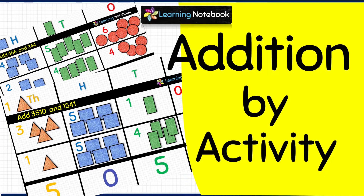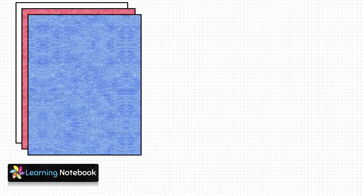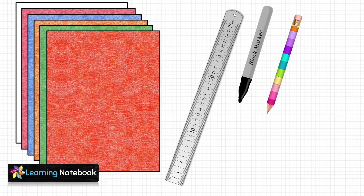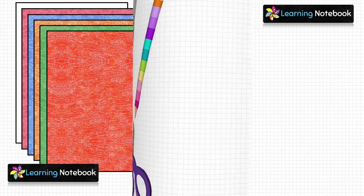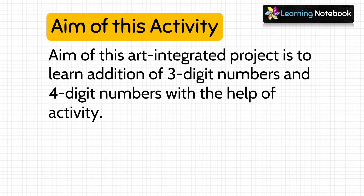You can find the list of all of them on our website as well — the link is below in the description box. For this activity we need a few colorful thick sheets, a ruler, a black marker pin, a pencil, and a pair of scissors. The aim of this art-integrated project is to learn addition of three-digit and four-digit numbers with the help of an activity.